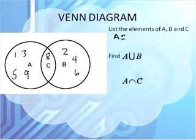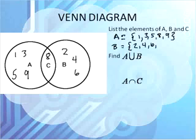We're going to list all of the numbers that are in this circle. A is the whole circle. So it's going to be one, three, five, eight, and nine. For set B, it has two, four, six, and eight. And then set C only has an eight in its set.